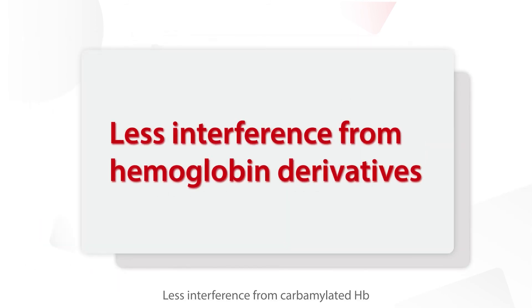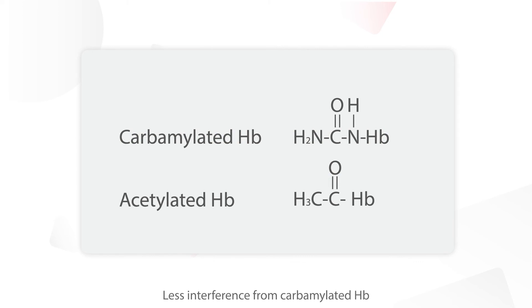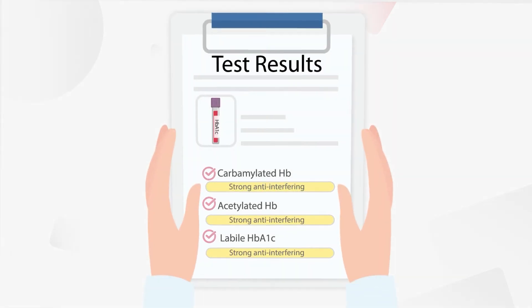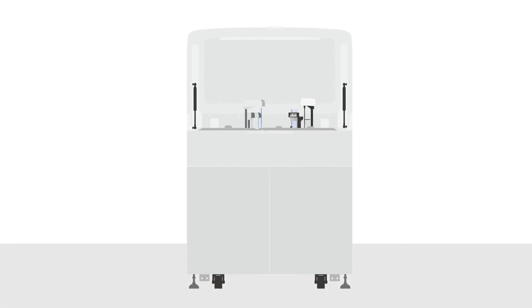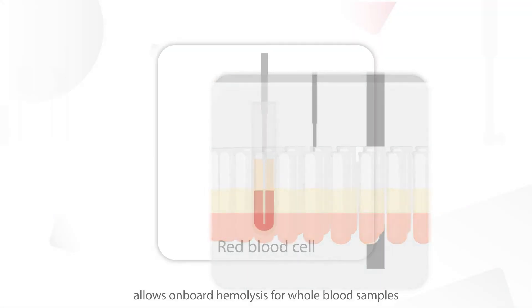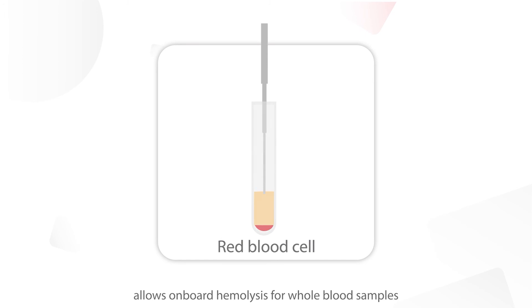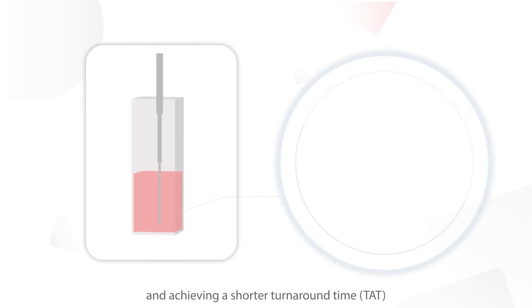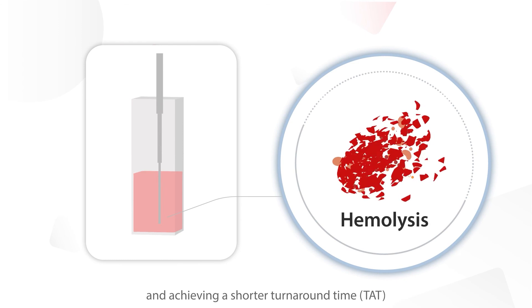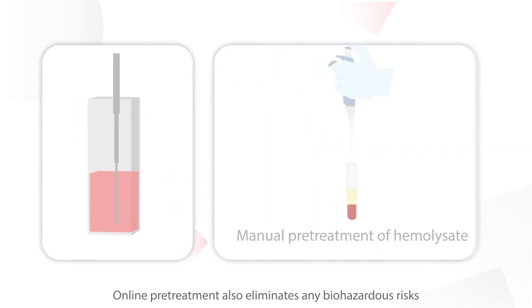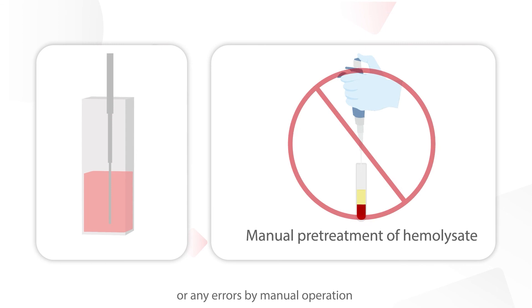There is less interference from carbamylated Hb, acetylated Hb, or labile HbA1c. Mindray HbA1c smart sampling technology allows onboard hemolysis for whole blood samples, thus simplifying laboratory workflow and achieving a shorter turnaround time. Online pretreatment also eliminates any biohazardous risks or errors from manual operation.